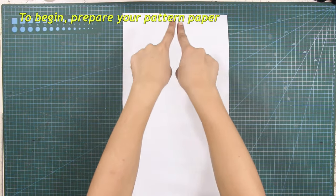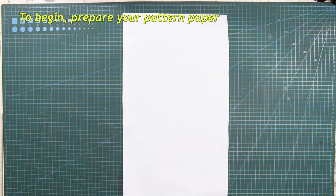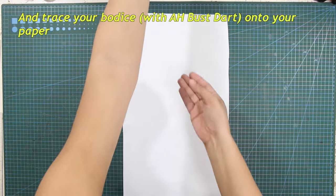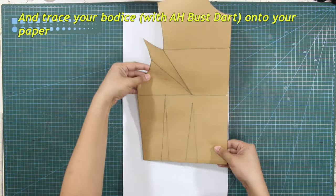Again, prepare your pattern paper and trace your bodice with armhole bust dart onto your paper.